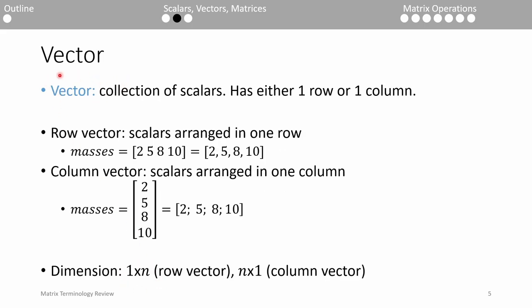A vector can be thought of as a bunch of scalars grouped together in either one row or one column. If the scalars are grouped horizontally, we call it a row vector. A row vector can use either spaces or commas to delineate the individual entries. If the scalars are grouped vertically, we call it a column vector.